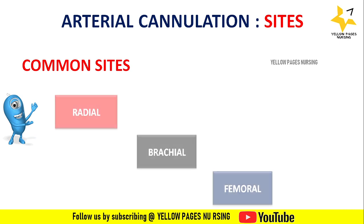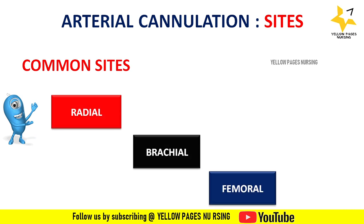The common sites used for arterial cannulation are radial, brachial, and femoral. The radial artery has low complication rates compared with other sites; it is a superficial artery which aids insertion and makes it compressible for hemostasis. The ulnar, brachial, axillary, dorsalis pedis, and posterior tibial are alternatives.